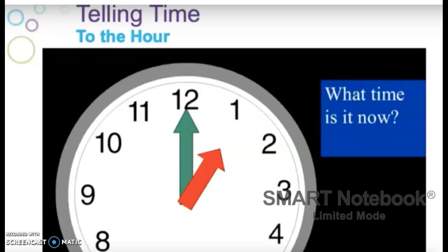Okay, let's try this time. What time is it now? Say it out loud. You are correct. The hour hand, which is the red one, is pointing to the one. So it is one o'clock.